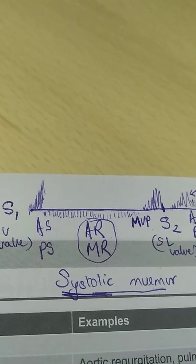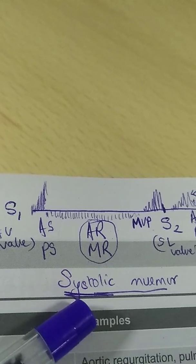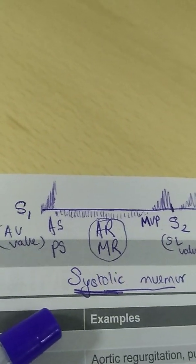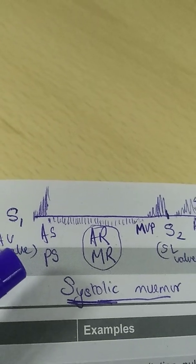What is systolic murmur? It is a murmur which takes place in the systole, that is between S1 and S2. This can be early systolic murmur, mid systolic, or late systolic murmur.